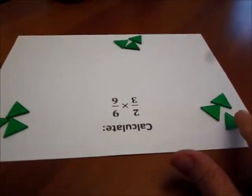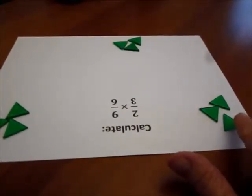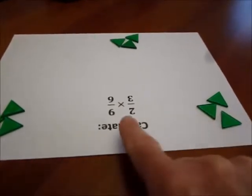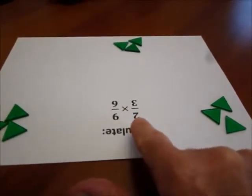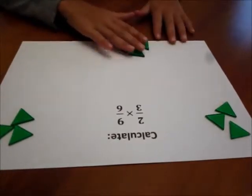So this is one-third of nine-sixths, but I want two-thirds of nine-sixths. So where do you see two-thirds of nine-sixths?